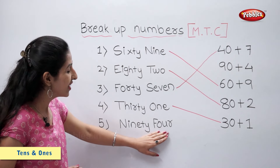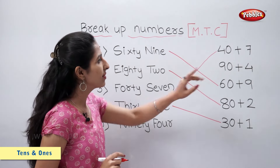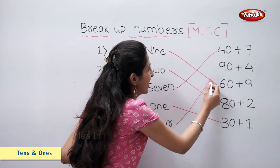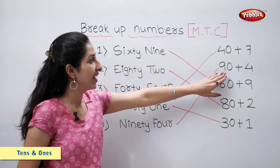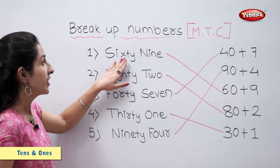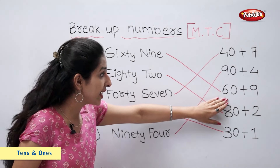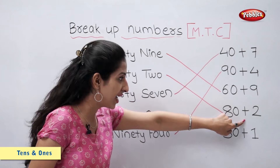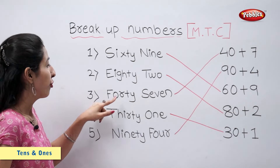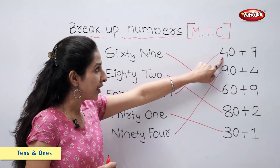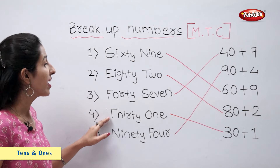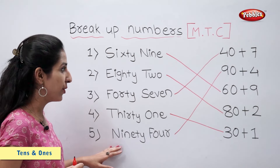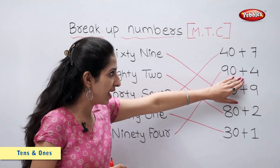90 plus 4. 94 is equal to 90 plus 4. So let's match — 94 is 90 plus 4. To recap: 47 is 40 plus 7, 31 is 30 plus 1, and 94 is 90 plus 4.